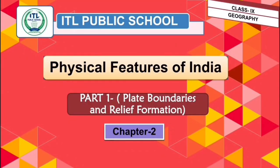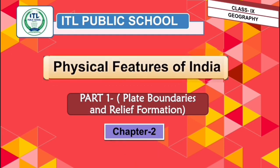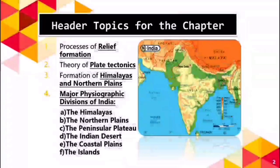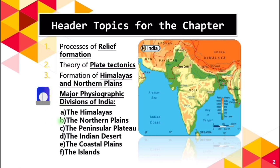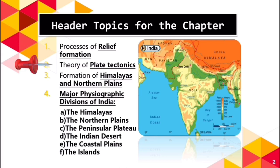Namaskar class, I welcome you all to Chapter 2, Class 9 Geography — Physical Features of India. In this chapter, we will be talking about some important topics like the processes of relief formation, theory of plate tectonics, formation of the Himalayan mountains and the northern plains, and the major physiographic divisions: the Himalayas, northern plains, peninsula plateau, Indian desert, coastal plains and islands. Today we are going to discuss the processes of relief formation, the theory of plate tectonics, and the formation of Himalayan mountains.